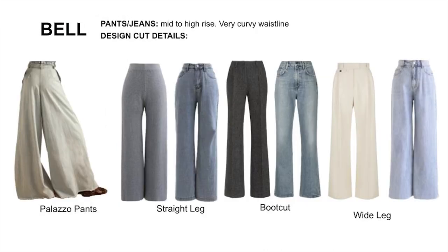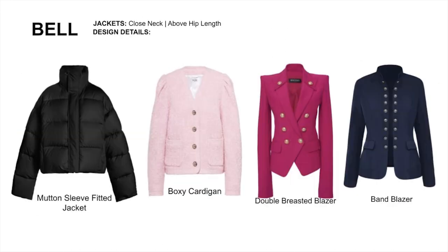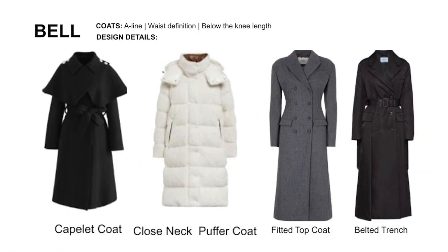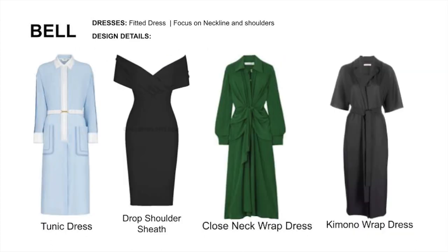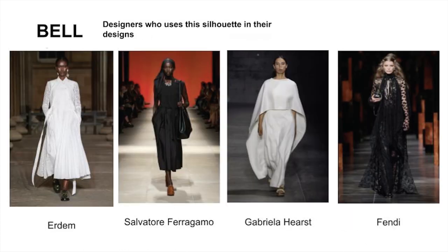For pants and jeans, go with mid to high rise — make sure the waist is very curvy with flared-out legs. For jackets, go with closed necklines and the length should hit just above the hips. For coats, go with a closed neckline and an A-line shape but create waist definition. For dresses, make sure it's fitted around the waist with focus on the neckline and shoulders. Here are some designers who design around the bell silhouette.